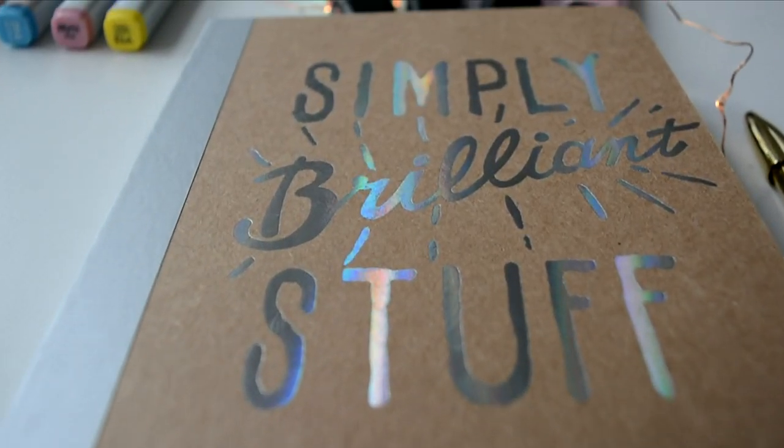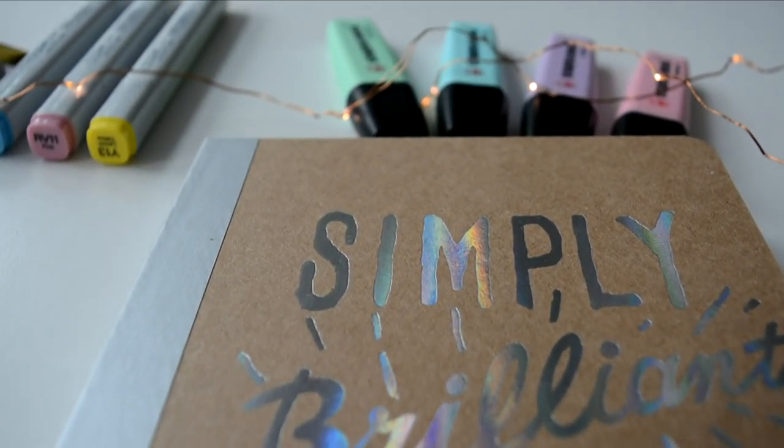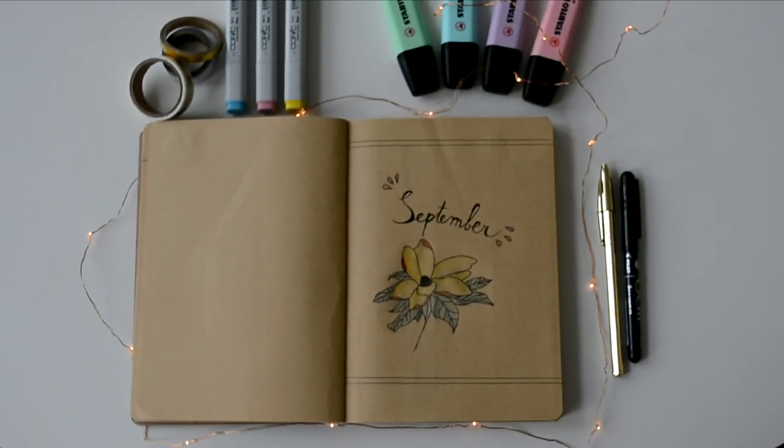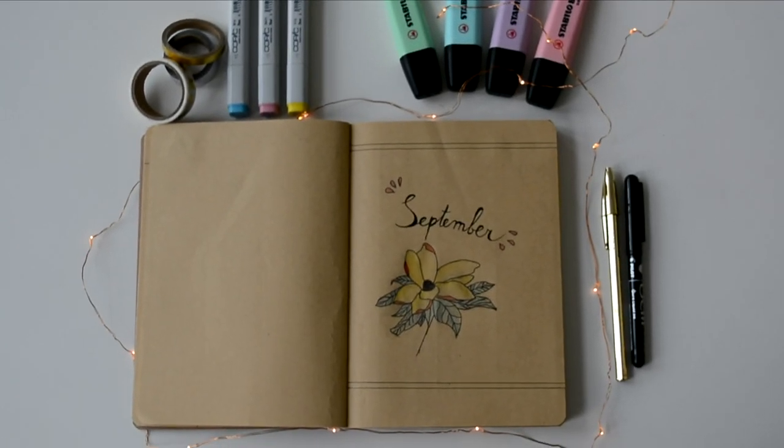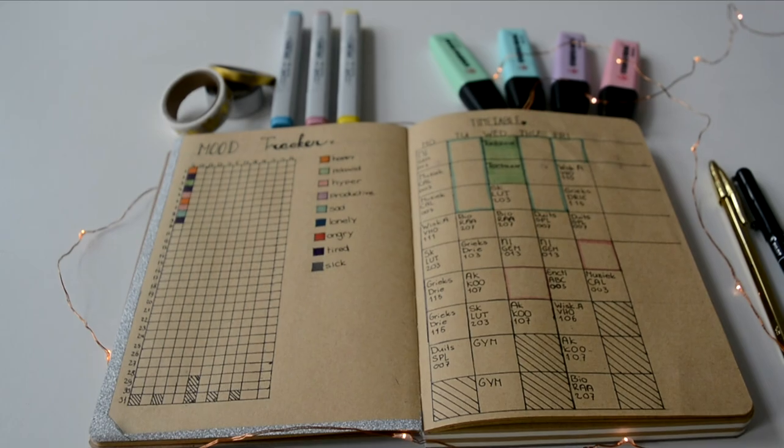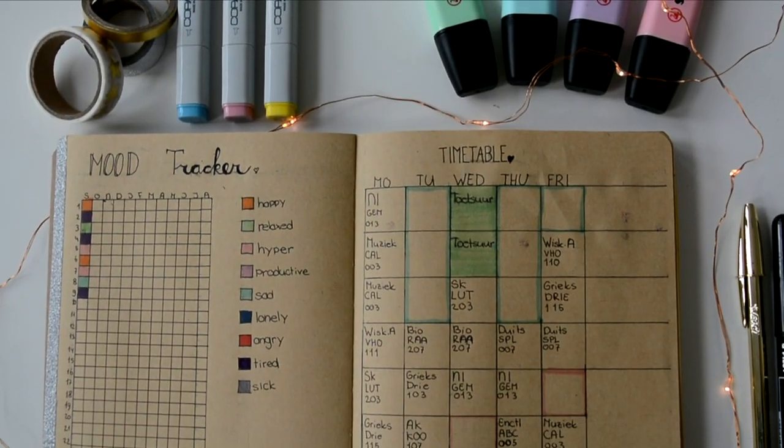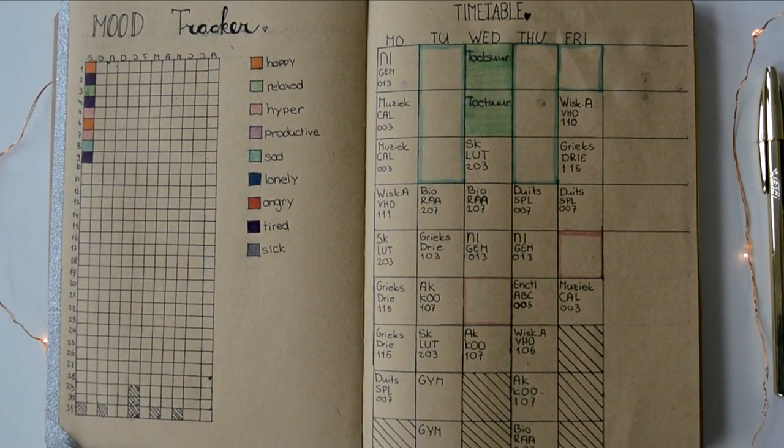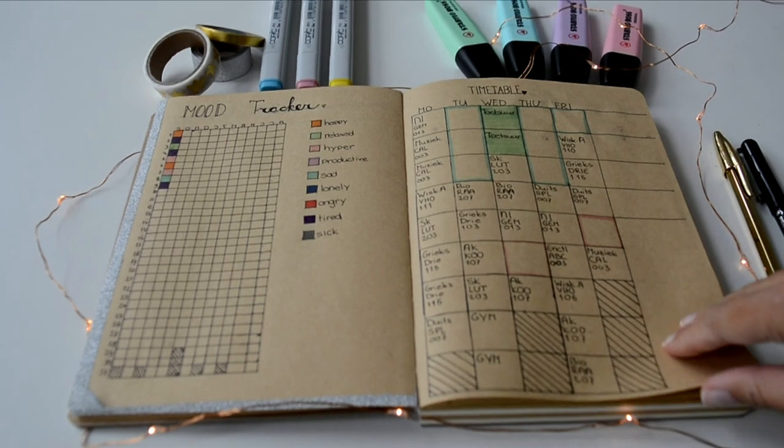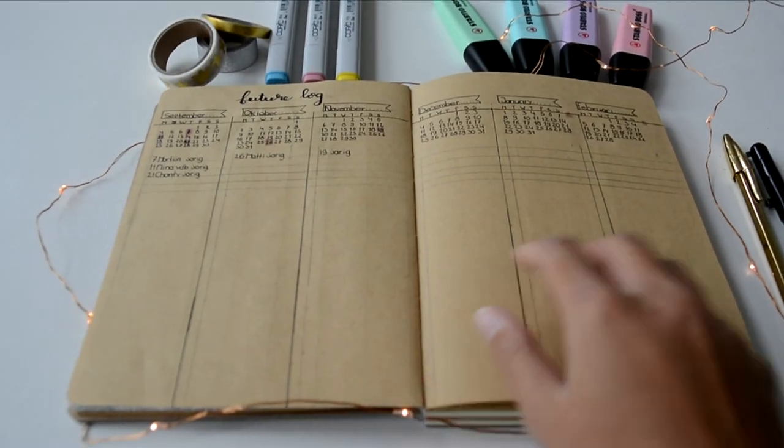For my bullet journal I used a notebook from HEMA with clear pages inside it. Here you see my yearly mood tracker and next to it my timetable for this year.